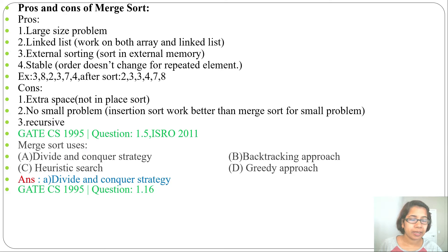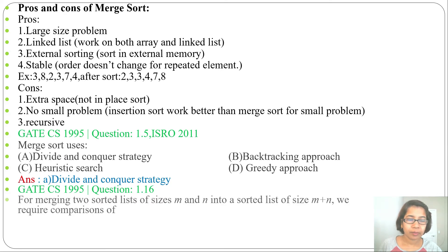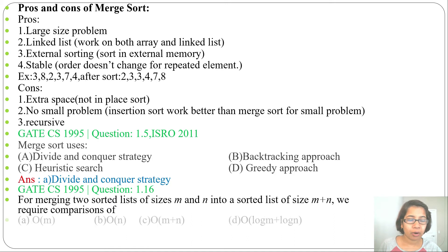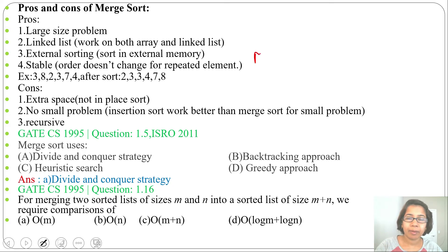Next question, it was asked in GATE CS 1995, question number 16: for merging two sorted lists of size M and N into a sorted list of size M plus N, we require how many comparisons? For merging two sorted lists, we require M plus N minus 1 comparisons.